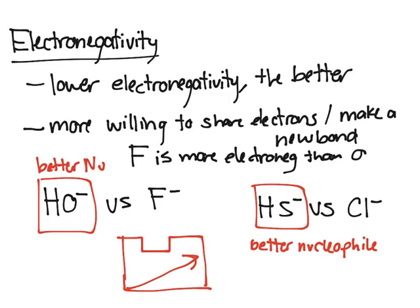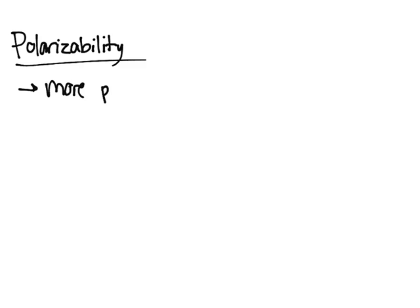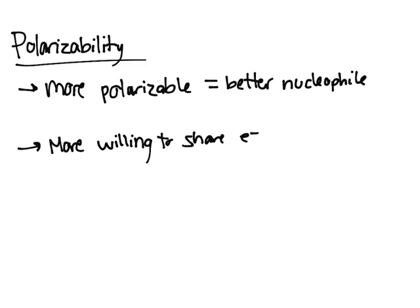Next, polarizability — essentially how big an atom is. The more polarizable something is, the better nucleophile it will be. As you go down the periodic table, atomic size increases. So Br⁻ is a better nucleophile than Cl⁻, and Cl⁻ is a better nucleophile than F⁻.